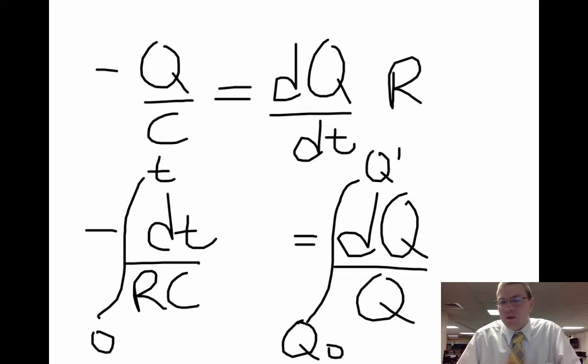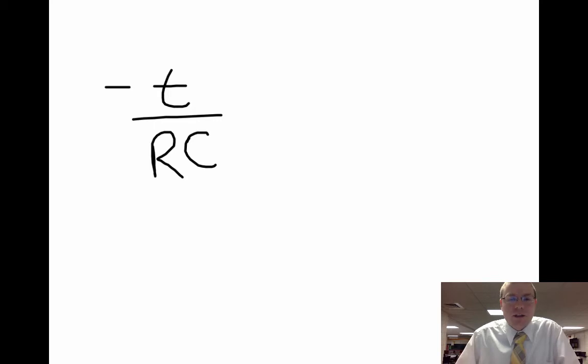So we're going to have to integrate both sides of this. The easy one to do is to integrate dt. dt just becomes negative T over RC.